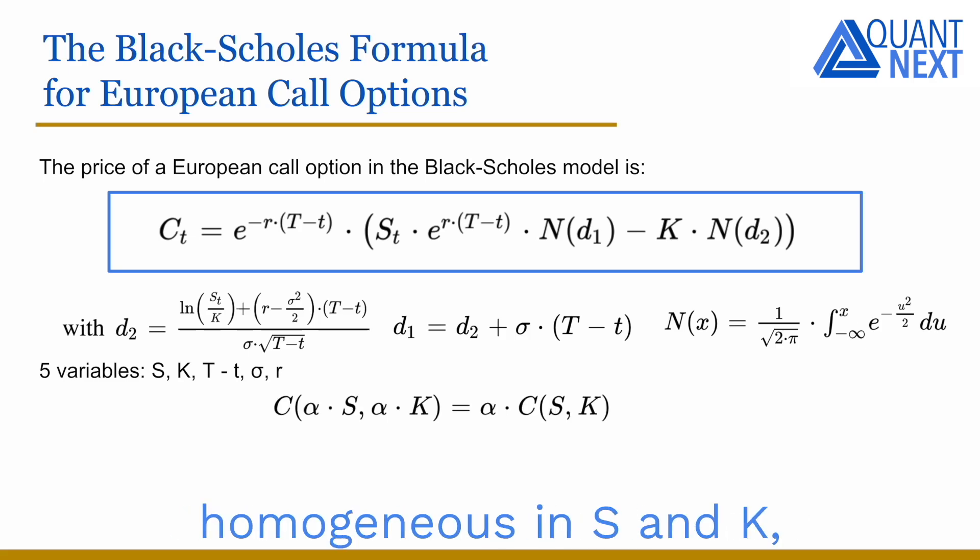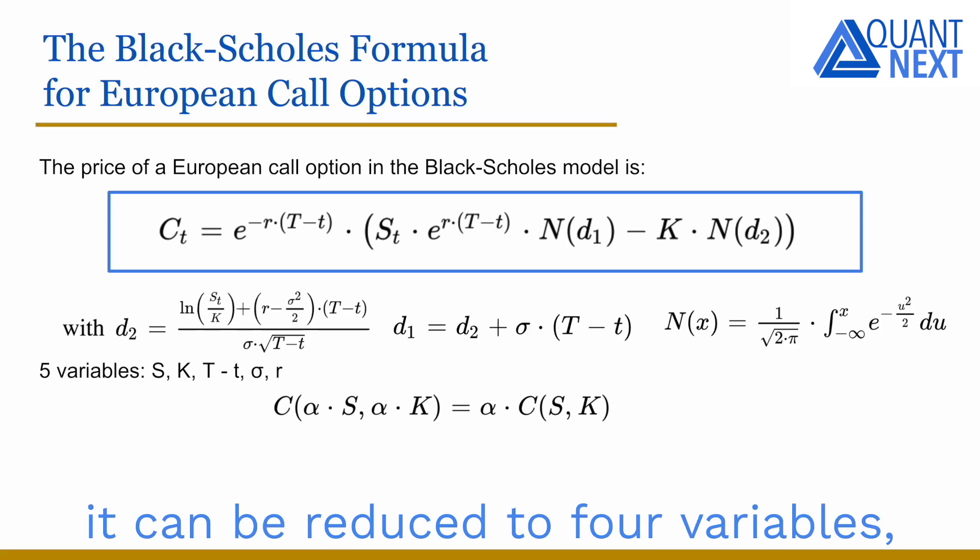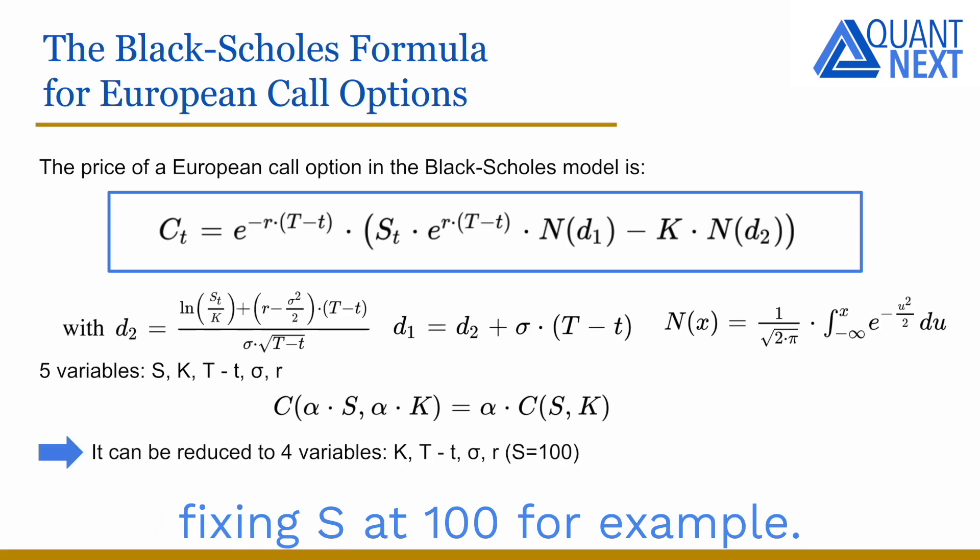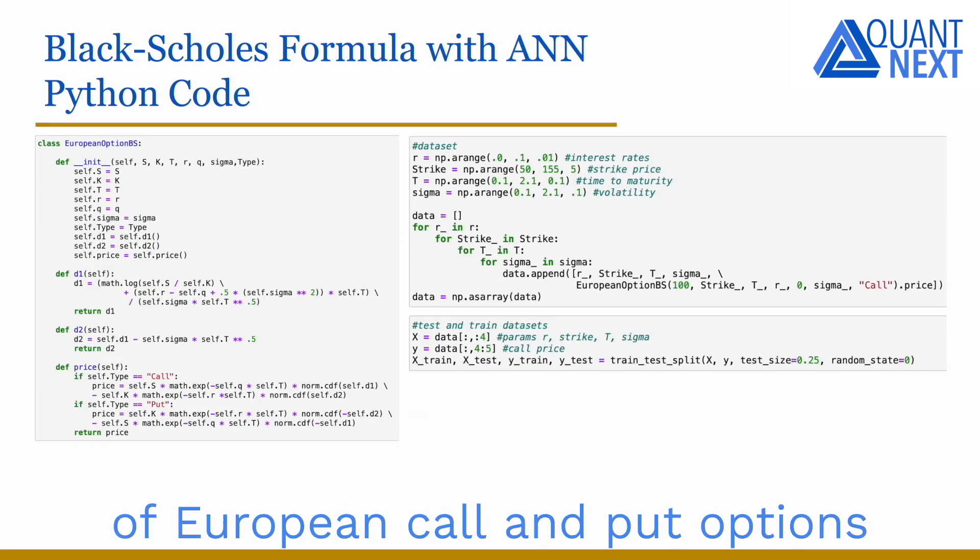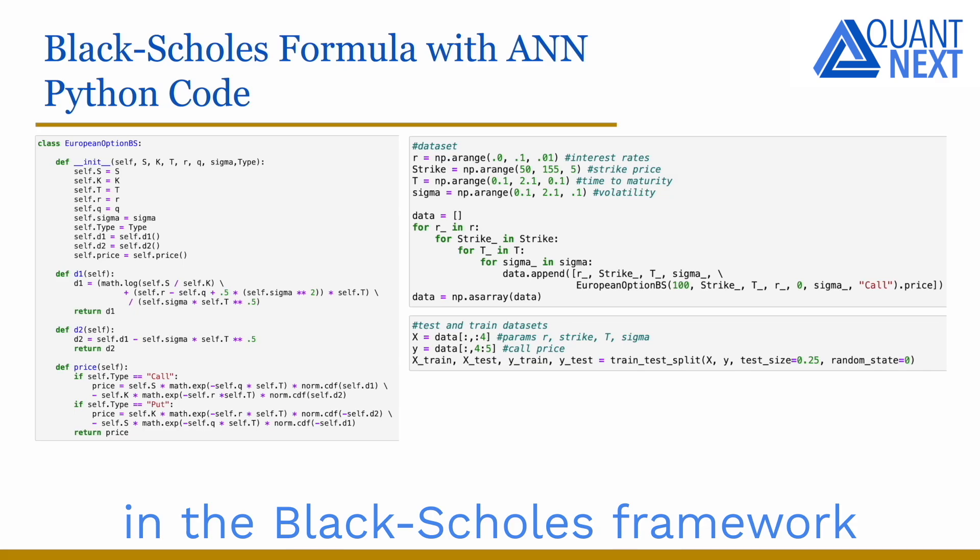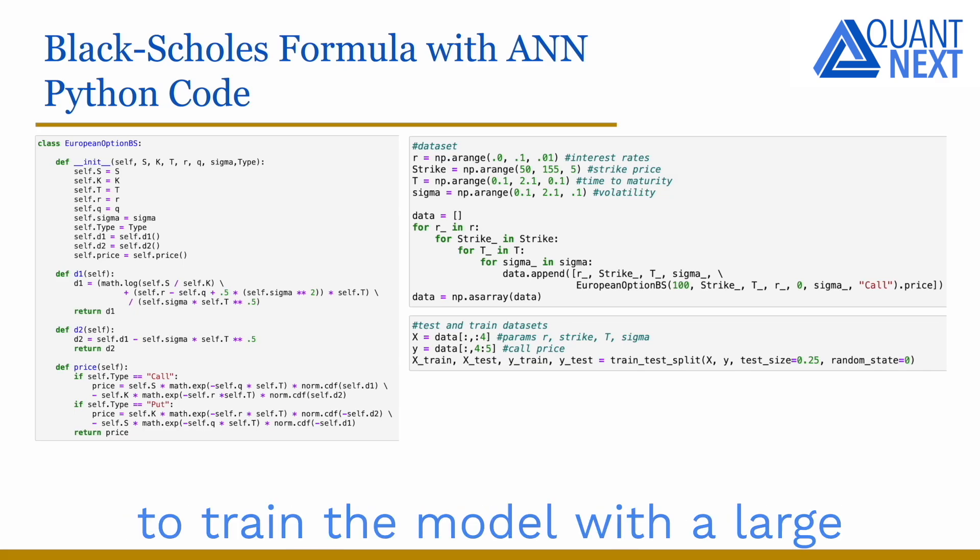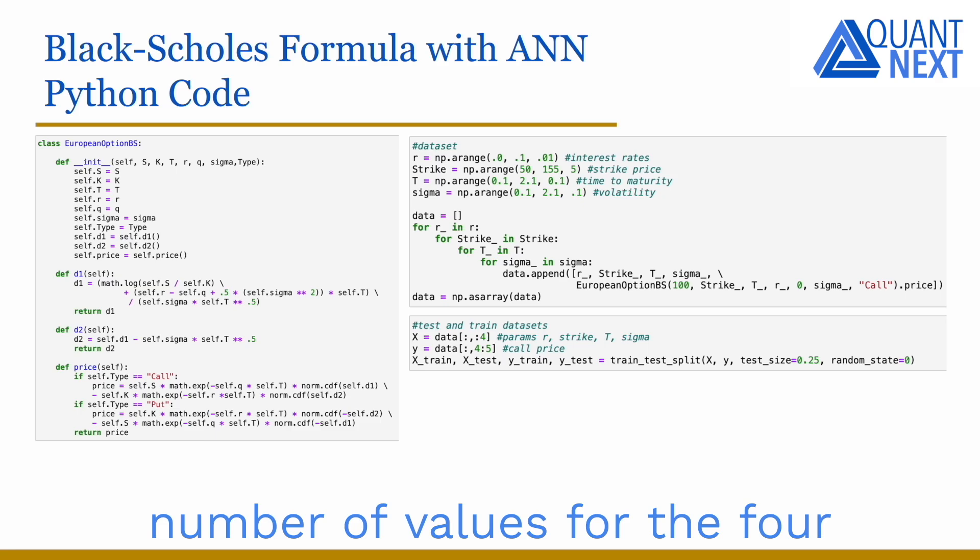As the option price is linear homogeneous in S and K, it can be reduced to 4 variables fixing S at 100 for example. We define the option prices of European call and put options in the Black-Scholes framework, and we create a dataset to train the model with a large number of values for the 4 variables and the corresponding European call option prices.